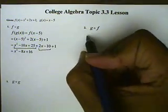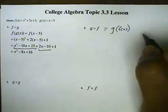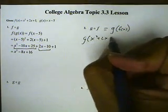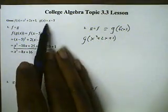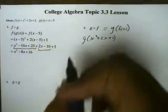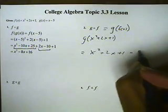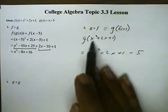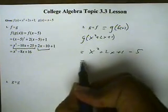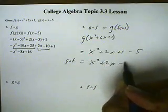Now we're going to do g composed with f. g composed with f means that f is going to be the inner function — the inner function will be x squared plus 2x plus 1. So everywhere we see an x for g, we're going to substitute that with all of this. So instead of x minus 5, this becomes x squared plus 2x plus 1 minus 5. The x got replaced with this entire expression, and we simplify to get g composed with f equals x squared plus 2x minus 4.